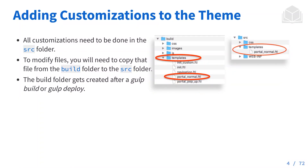This base theme is represented in the build folder. The source folder is where all of our customizations are going to go. A normal process for developing a theme is taking content from the build folder, bringing it to the source folder, and then modifying it from there. On deploy, it's going to build the build folder first and then take our customizations and overwrite that base theme with our customizations.